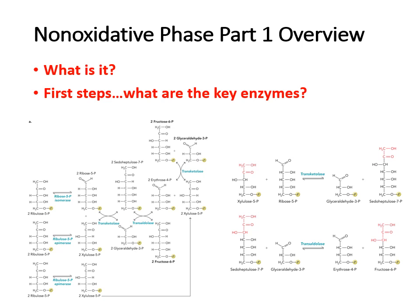That brings us to the non-oxidative phase. The purpose of the non-oxidative phase is to make various multiple carbon sugars — think of it as the 'carbon shuffle.' You get a whole series of shuffling of carbon skeletons to give various forms of sugars. It's catalyzed by enzymes called transketolase and transaldolase. Ultimately, one goal is to convert ribulose 5-phosphate into ribose 5-phosphate, which is important for nucleotides.